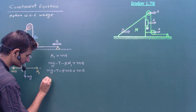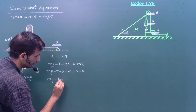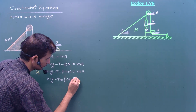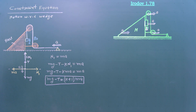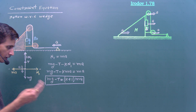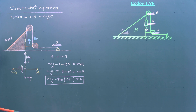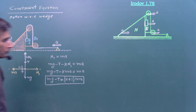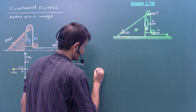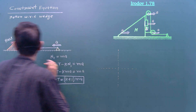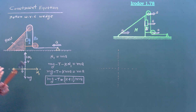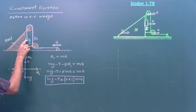Rearranging: mg minus T equals (k + 1)·m·a. This is our first equation, but with two unknowns T and a, we need one more equation. To find it, we draw the free body diagram of the wedge. We only need to consider the x direction. mg acts downward on the wedge, but we only need horizontal forces.